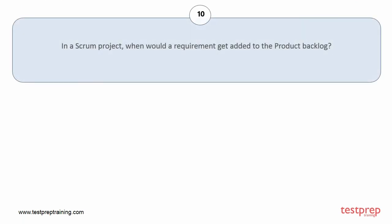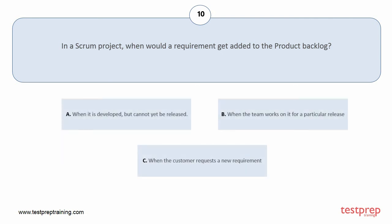Question number 10: In a scrum project, when would a requirement get added to the product backlog? Your options are: A, when it is developed but cannot yet be released; B, when the team works on it for a particular release; C, when the customer requests a new requirement. The correct answer is option C.